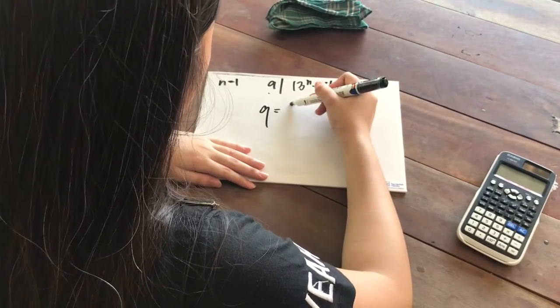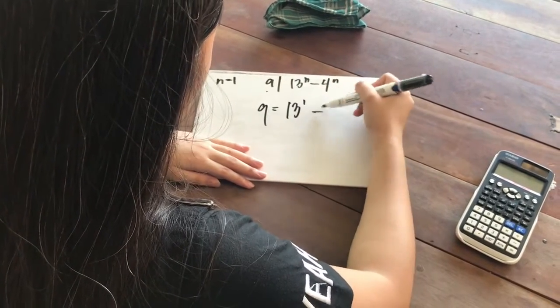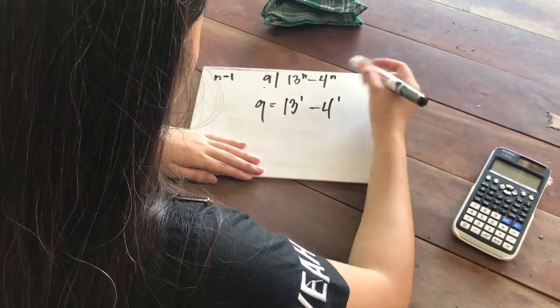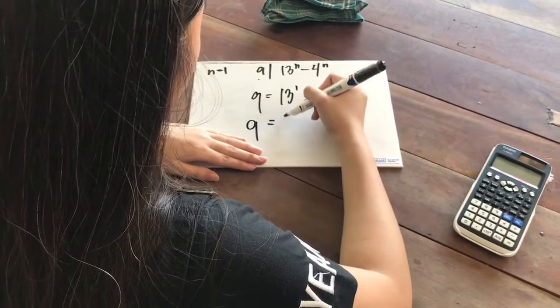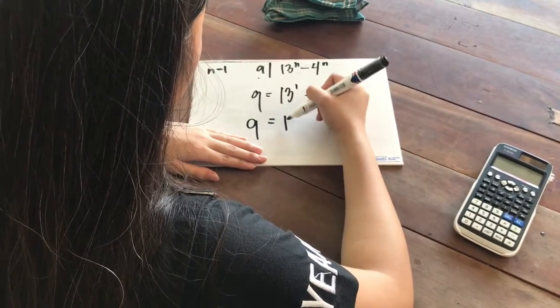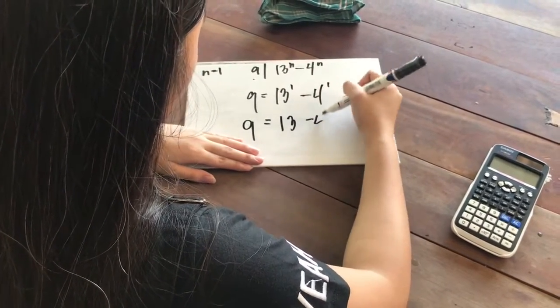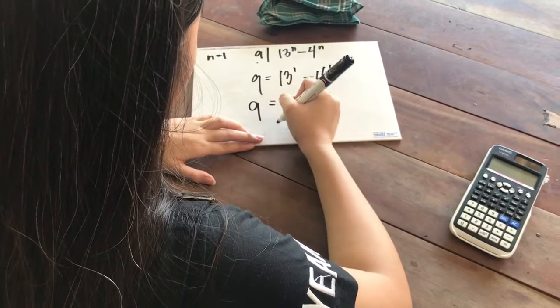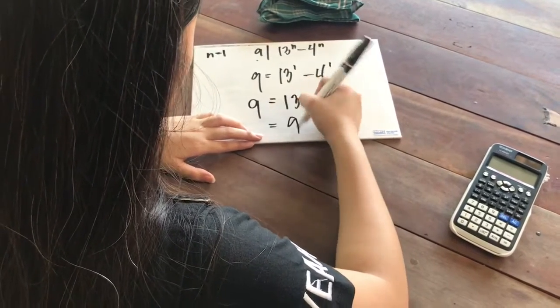9 is equal to 13 raised to 1 minus 4 raised to 1, which is equal to 13 minus 4, and 13 minus 4 is equal to 9. So the base case holds.